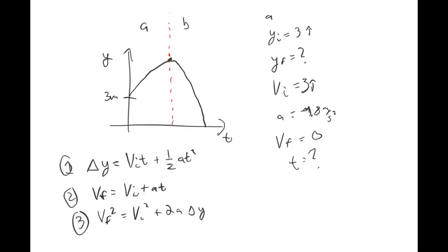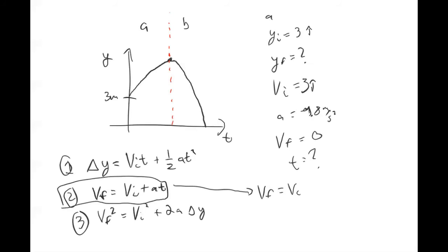Equation one is not good because we don't know the final height. Equation three doesn't have time in it. The easiest thing is to use equation two: v-final equals v-initial plus a times t. Solving for time, subtract v-initial and divide by acceleration. The final velocity was zero, initial velocity was three, dividing by negative 9.8 — so three divided by 9.8 gives 0.306 seconds. That's just the time to reach the maximum height.